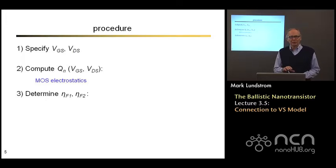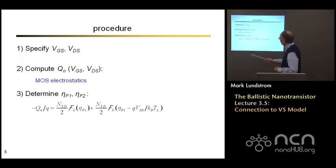The next thing we need to do is to determine the location of the Fermi energy because injection velocities and other things in our expressions depend on the location of the Fermi energies. The way to do that is to remember that the total electron charge is due to the positive velocity electrons, which depend on a Fermi Dirac integral with the Fermi level of the source, and added to that the negative velocity electrons, which depend on the Fermi level of the drain. That equation can be solved since we've computed the charge from MOS electrostatics. This is a complicated non-linear equation that we'll have to solve by iteration, but that's easy to do with MATLAB or something like that.